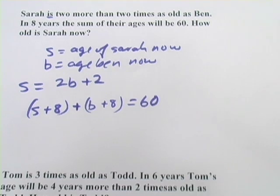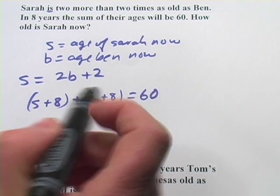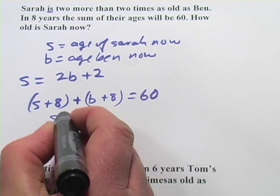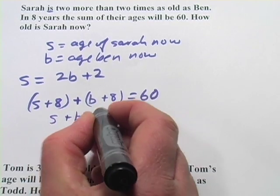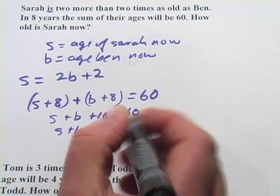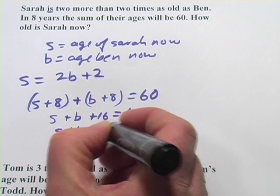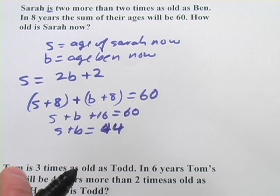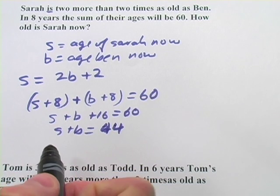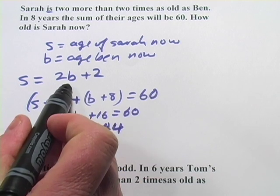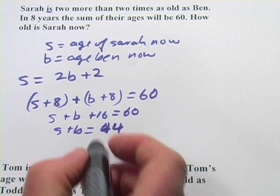We're trying to find out how old Sarah is. So let's go ahead and add our like terms here. So we're going to have S plus B plus 16 equals 60. So S plus B equals 44. And let's see, we want to solve for Sarah. So I think I may solve this one for B and then substitute it back in here.